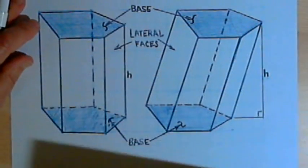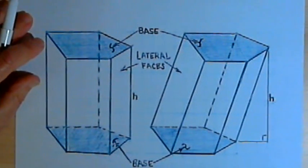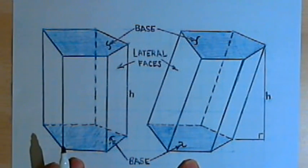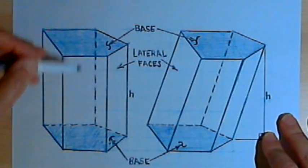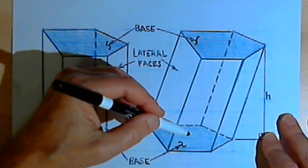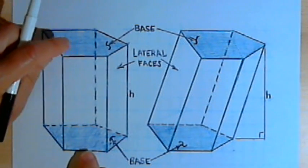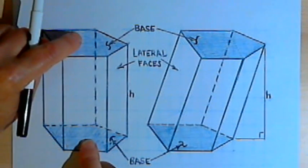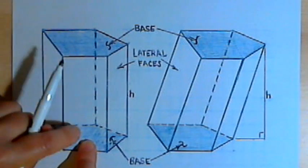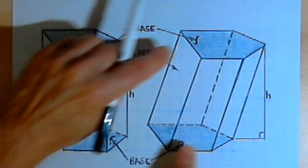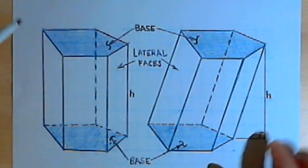Let's make sure we understand what a right prism is. I've got a picture here with two prisms. Both of the prisms have pentagons as their bases. For both prisms, the pentagons, the two bases, are congruent, they're identical, and they're parallel to each other.